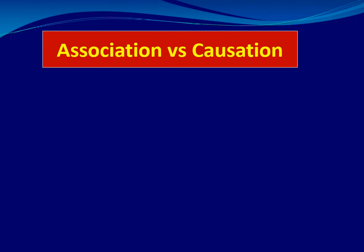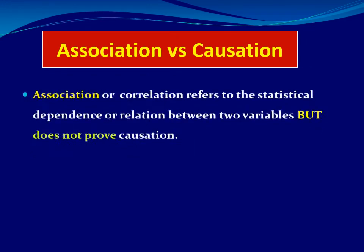Association versus causation: association or correlation refers to a statistical dependence or relationship between two variables, but does not prove causation.